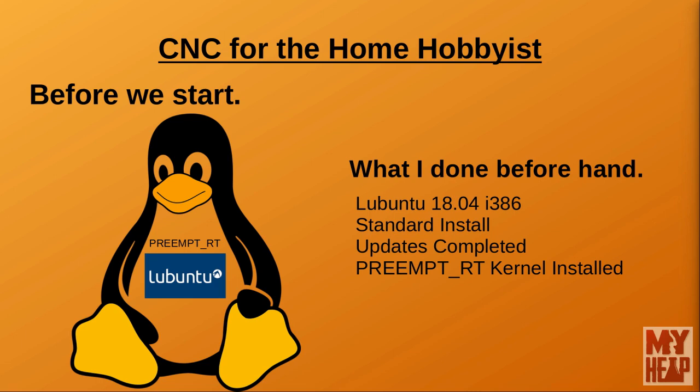The URLs for both will be in the description below the video. The setup I'm going to use to demonstrate is an i386 or 32-bit installation of Lubuntu 18.04 LTS. Lubuntu was chosen because of its lightweight desktop and continued support. 18.04 LTS is the newest available long-term support edition at the time of this recording. The system was installed using only the default selections, updated, and a real-time preempt RT kernel was compiled and installed.